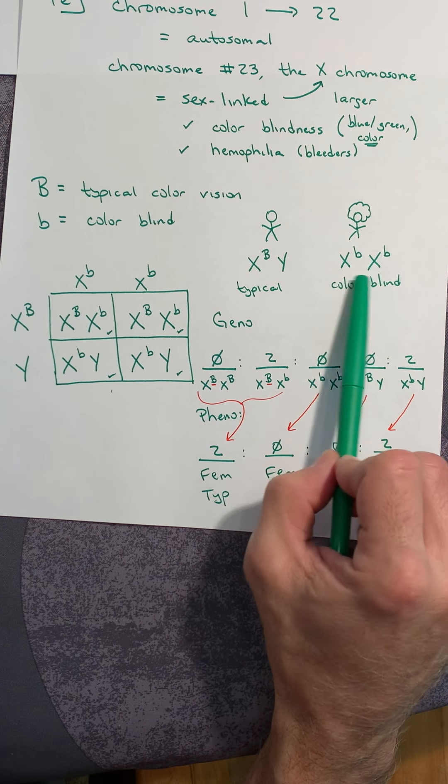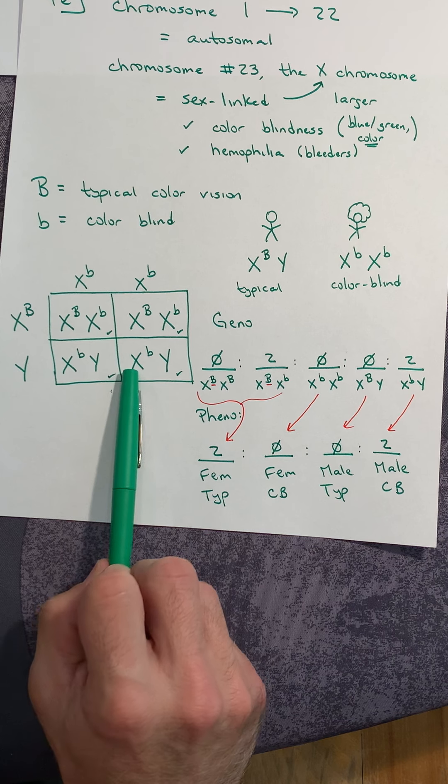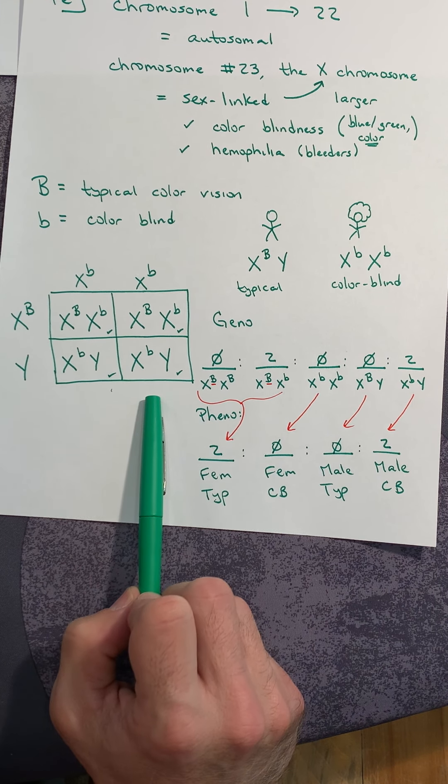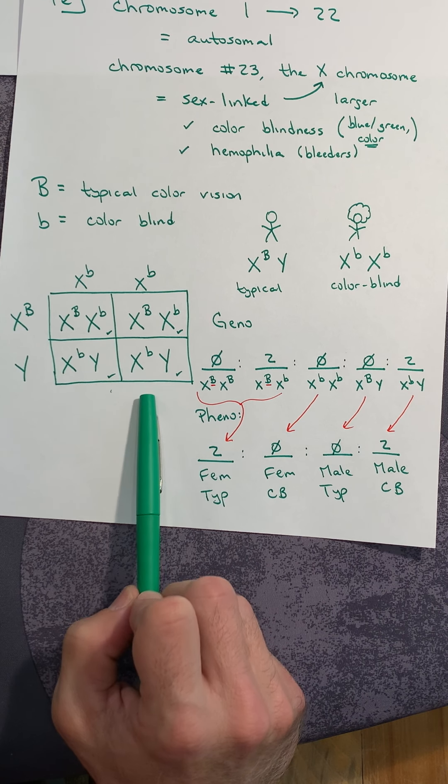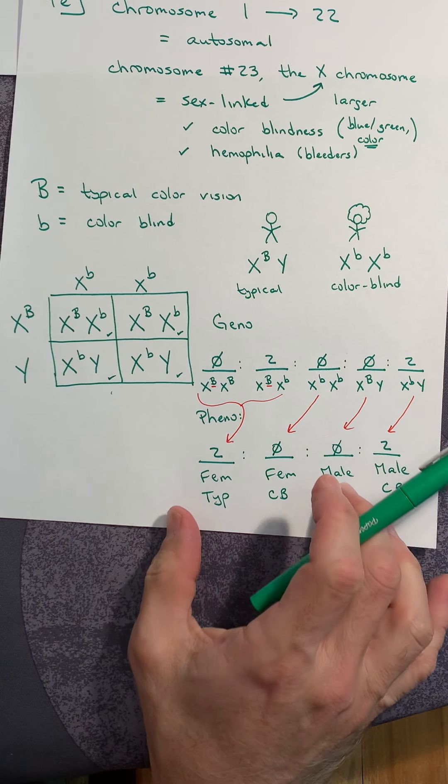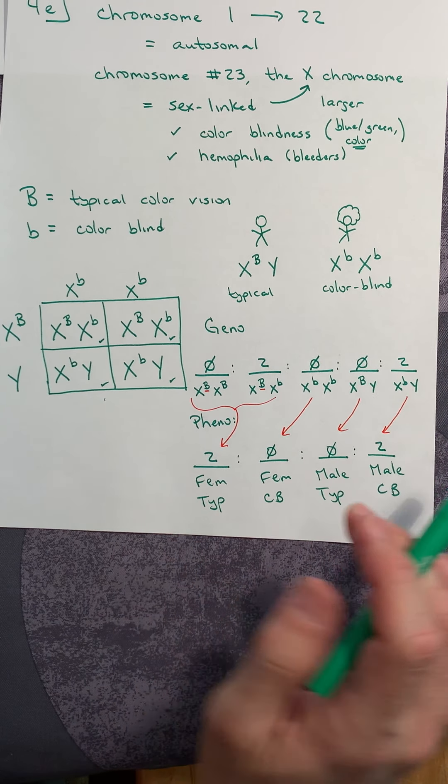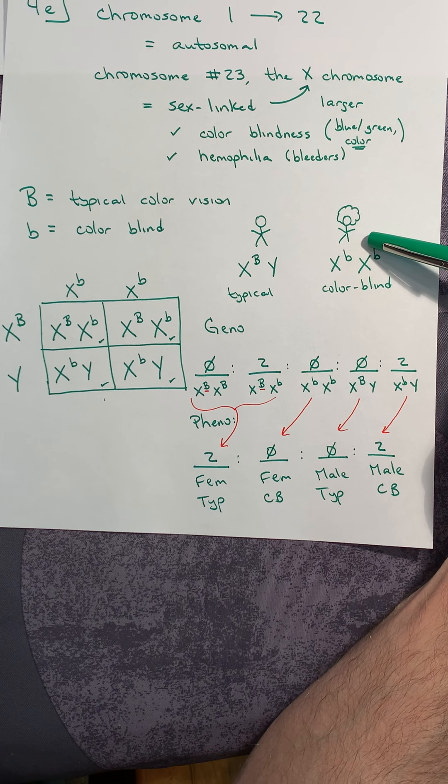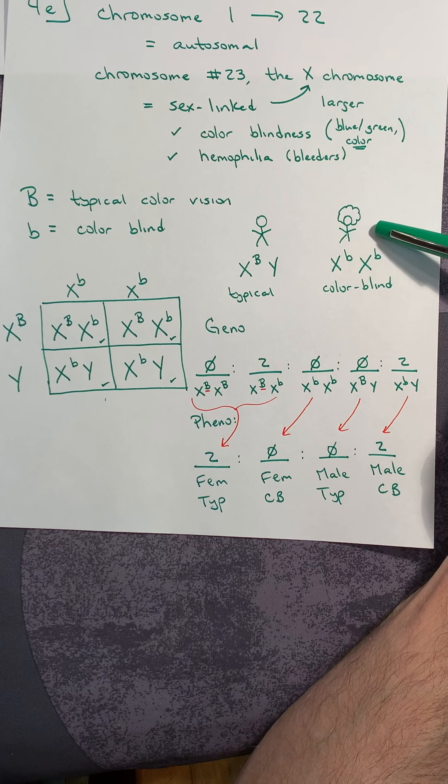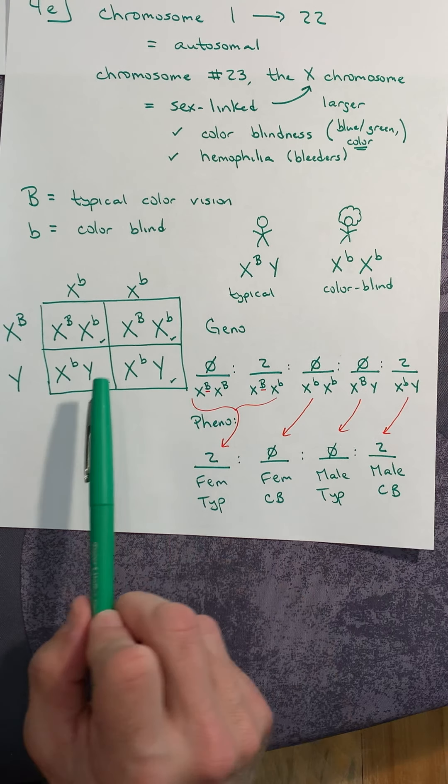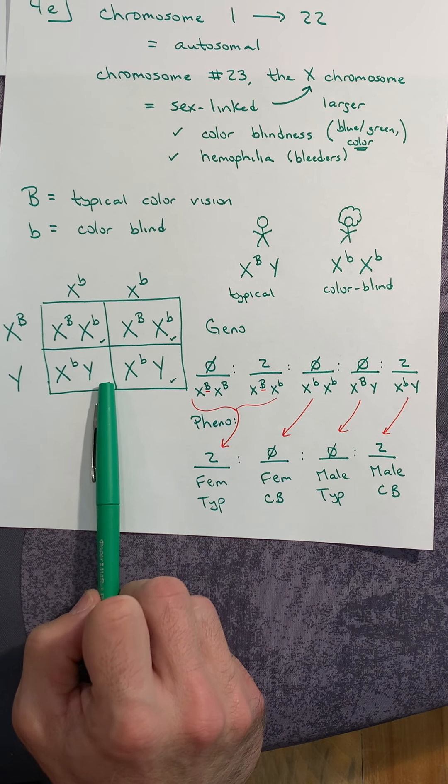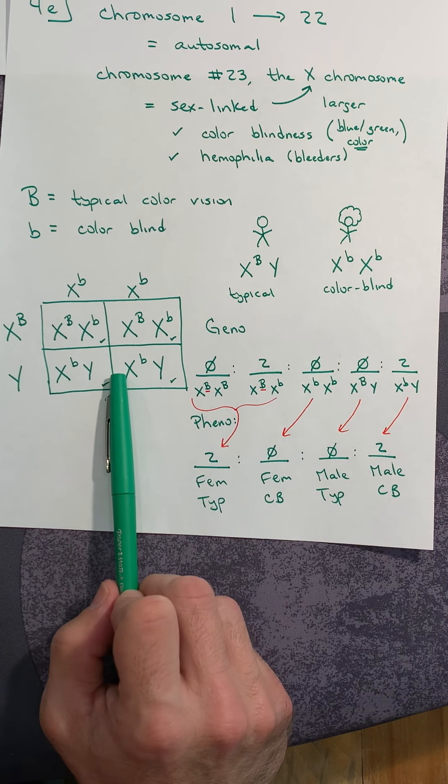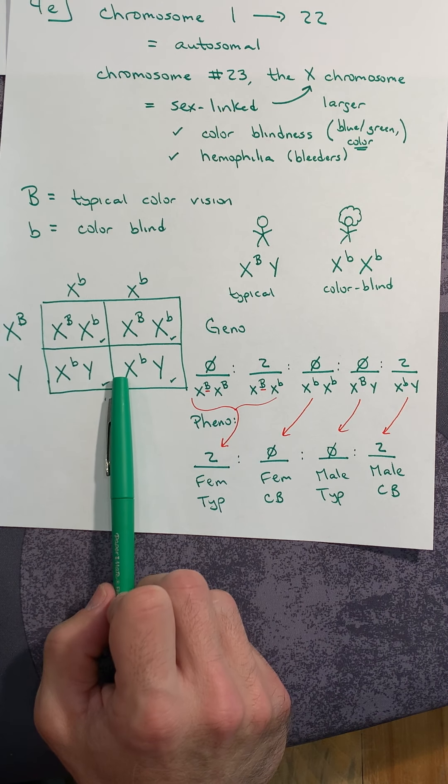This is where the technology came from to allow parents to choose the sex of their child. They weren't trying to make designer babies at all—they were trying to help colorblind females, but more importantly, hemophiliac females. Hemophiliac females don't want sons because her son will suffer from the same condition that she does.